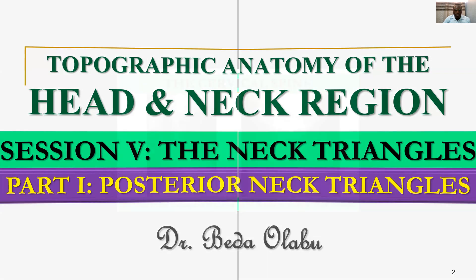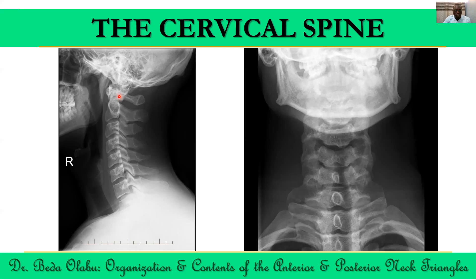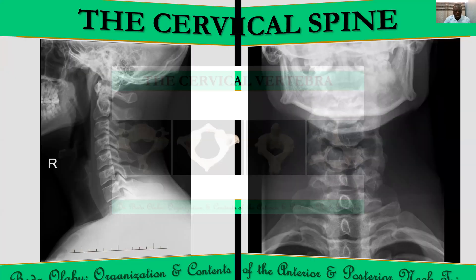We'll start with just a review of the cervical spine. Remember that the cervical spine consists of seven vertebrae. In a lateral view, we note that the cervical spine displays the lordotic curve, which means that it is convex anteriorly and concave posteriorly. We have a total of seven cervical vertebrae.